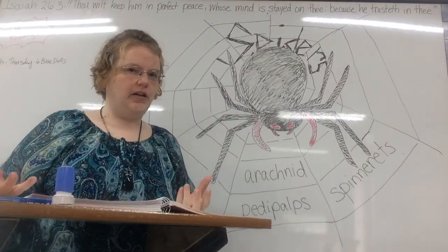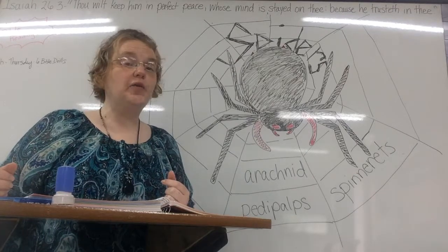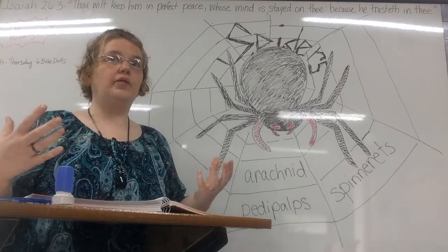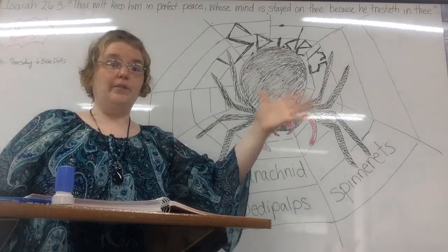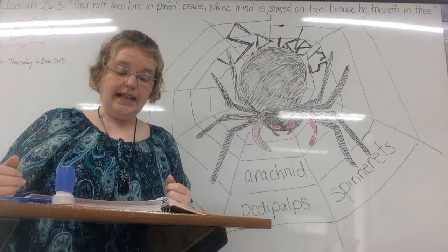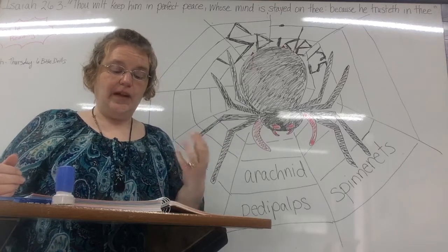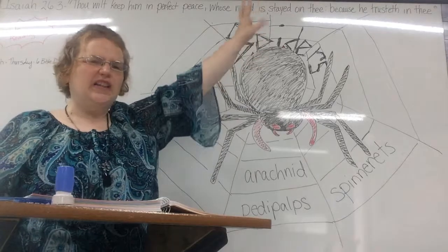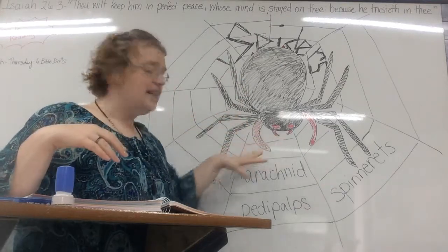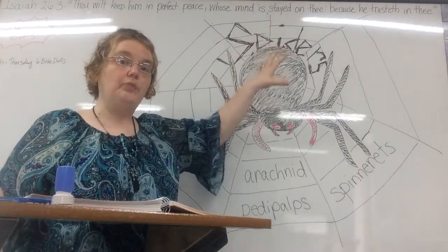A spider's web seems fragile but is actually quite strong — much stronger than most man-made fibers. In fact, during a strong storm, spider webs usually don't fall down. An insect that touches the sticky threads of the web gets caught and cannot get loose, becoming the spider's meal. The spider waits in a corner, and when an insect flies into the web the silk is so sticky the insect can't get away.